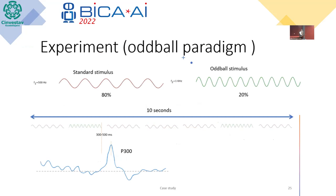To validate our model, we performed an experiment using the oddball paradigm, which consists of two stimuli. The standard stimulus takes 80% of the time of the set and the oddball stimulus takes 20%. Each oddball sound produces a signal in the human brain called the P300, which appears 300 to 500 milliseconds after the oddball stimulus.